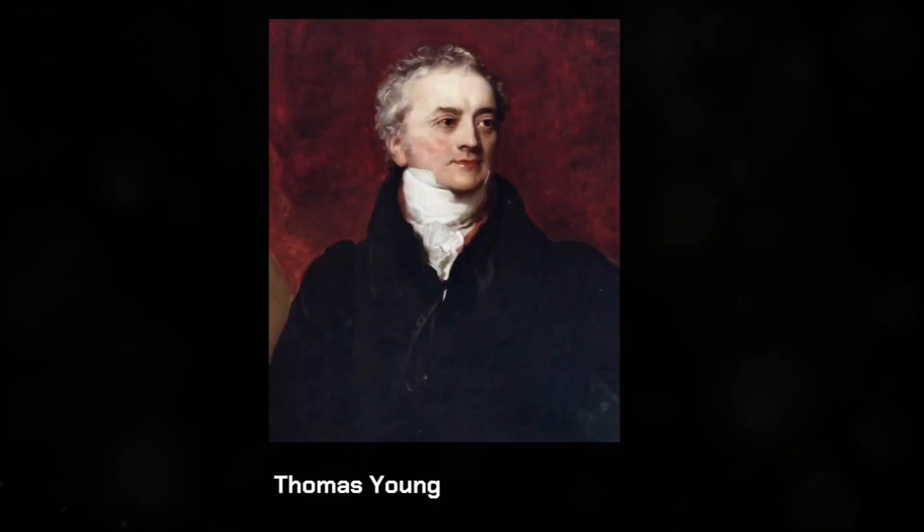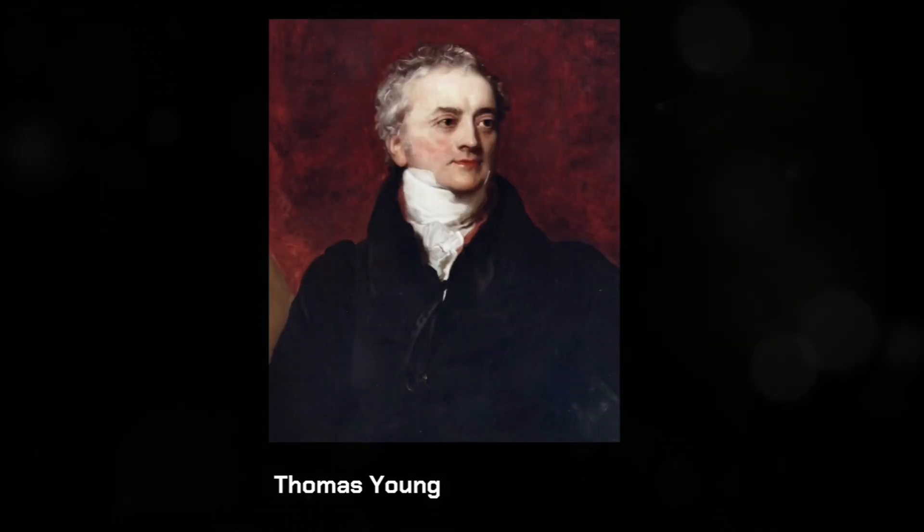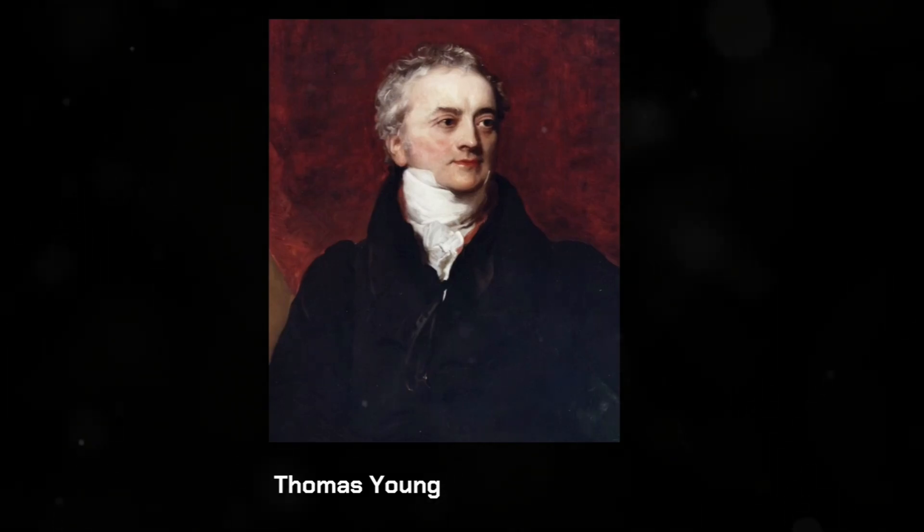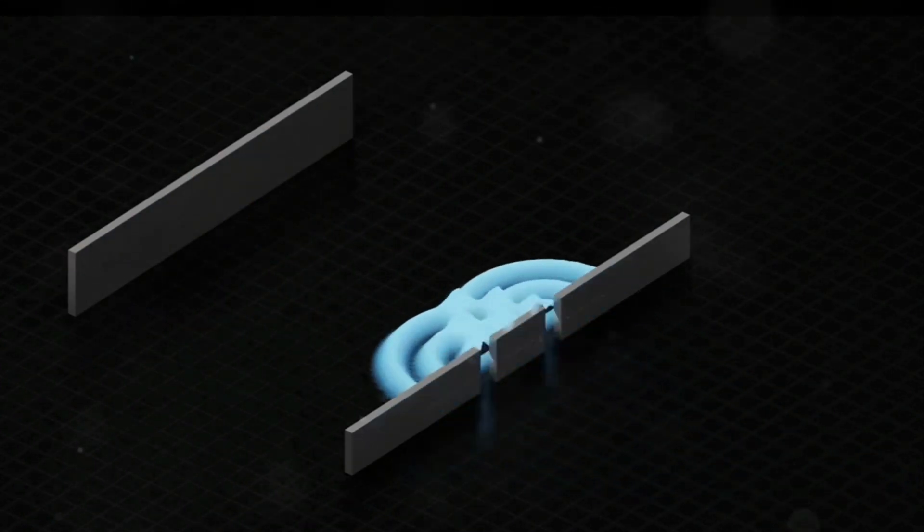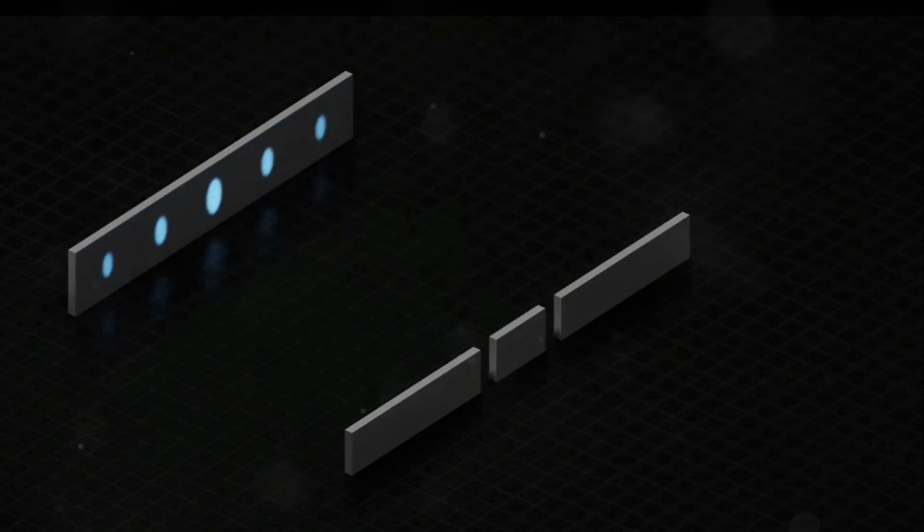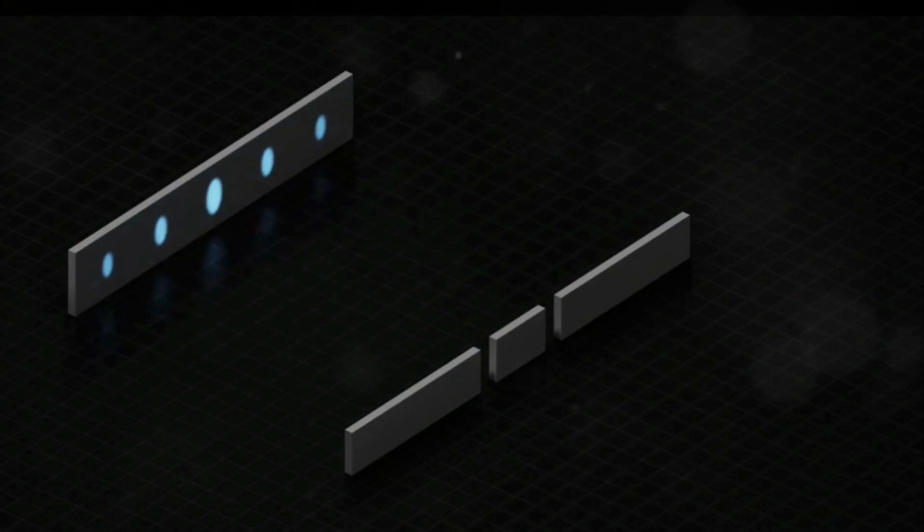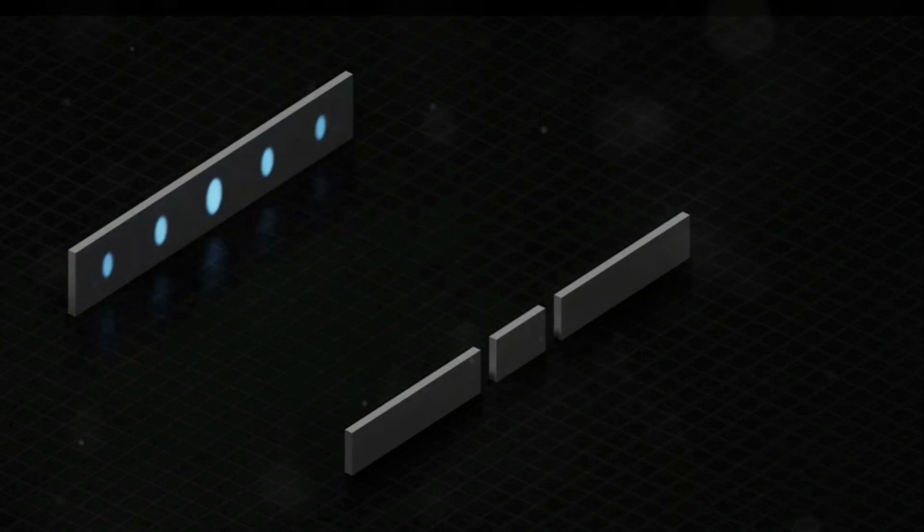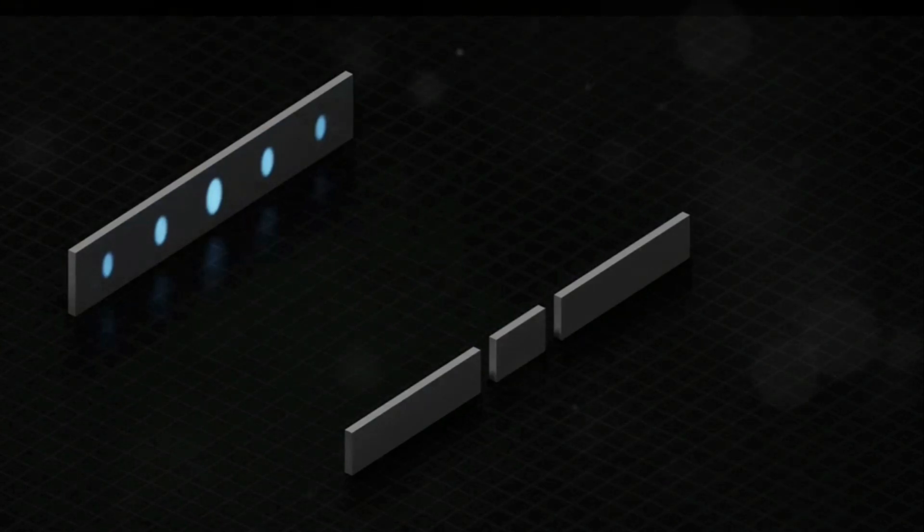According to Newton, light was simply a stream of particles that traveled through space and interacted with objects. This idea was widely accepted for many years. However, in the early 1800s, a British scientist named Thomas Young challenged this well-known theory. He decided to figure this out with a clever experiment designed to understand the nature of light. He sent light through those two openings, expecting to see two simple lines of light if light was just made of particles, as it was widely believed then. However, what Young actually saw was completely unexpected. Instead of just two lines, he saw a pattern of many lines with bright areas and dark areas next to each other.